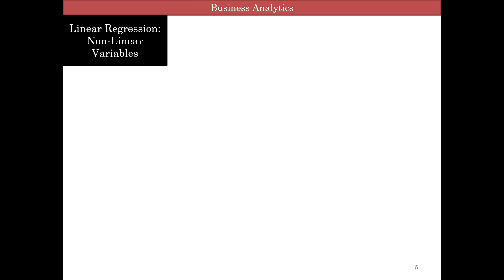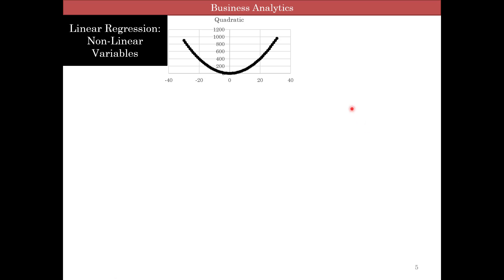Let's look at linear regression with nonlinear variables. Here we have an example of how if your independent variable has a square function — called quadratic — so long as the values are negative, you'll see it decreasing, and then it hits zero, and then it'll increase. This U-shaped curve is what a quadratic function looks like.